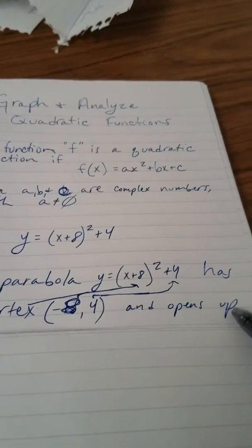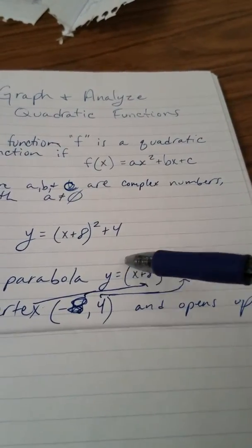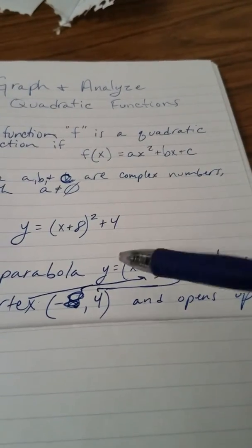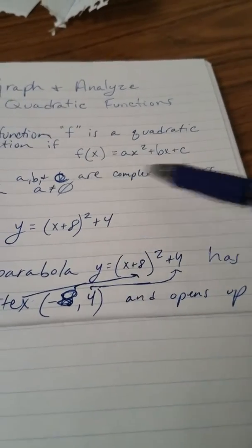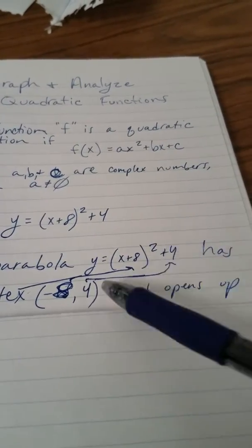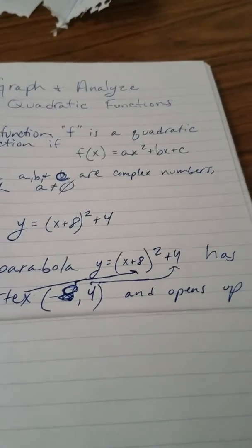And it opens up because a, which is an invisible 1 here, is positive because it's greater than 0. If it was less than 0, it would open down.